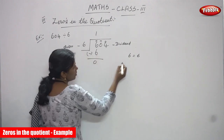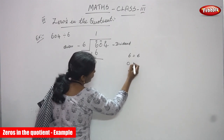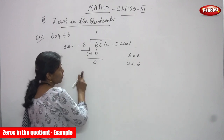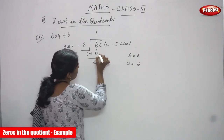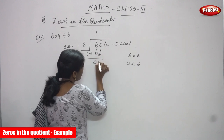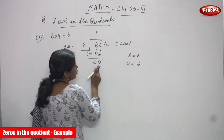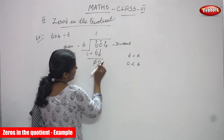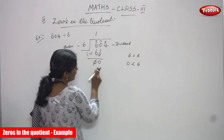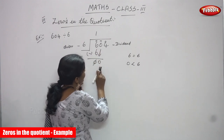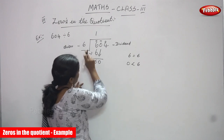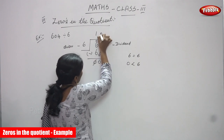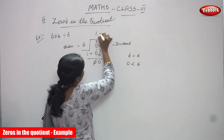Now compare 0 with 6. 0 is less than 6, so 0 is not enough to divide. You have to bring the next digit down. That digit is also 0. So 0 compared with 6 — you can't divide. Cancel the 0. Bring down the next digit. 0 and 6 — 0 is not enough to divide by 6. So you have to put 0 in the quotient place.